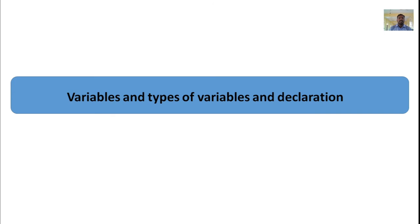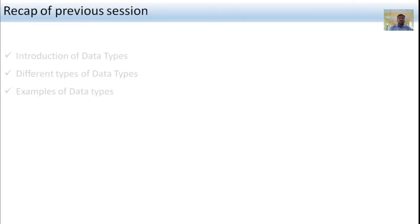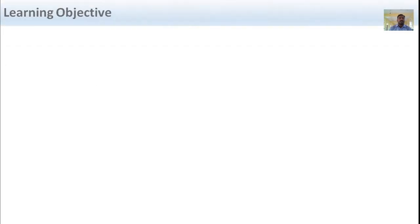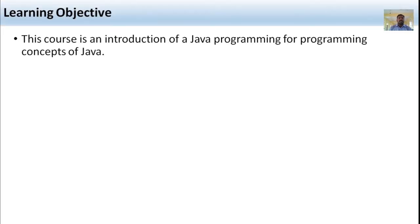In this session, we will discuss about variables, types of variables, and declarations. In the previous session, we discussed the introduction of data types, different types of data types, and examples of data types. The main objective of this subject is studying the programming concepts of Java.